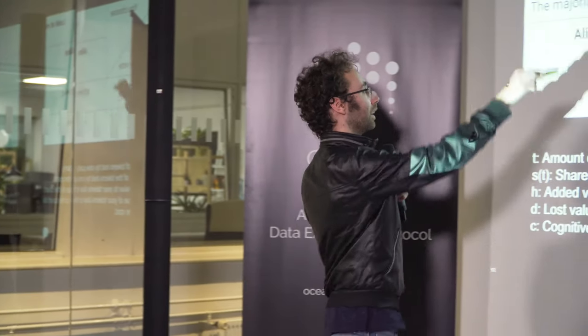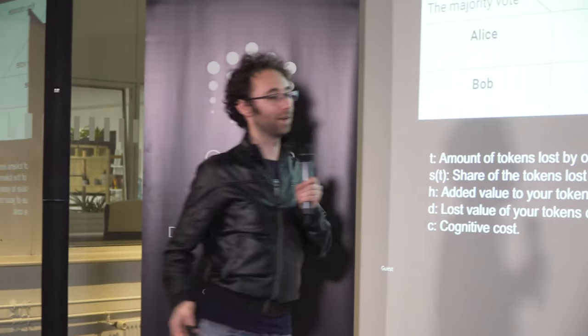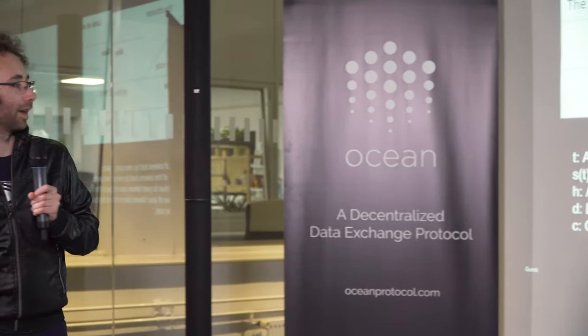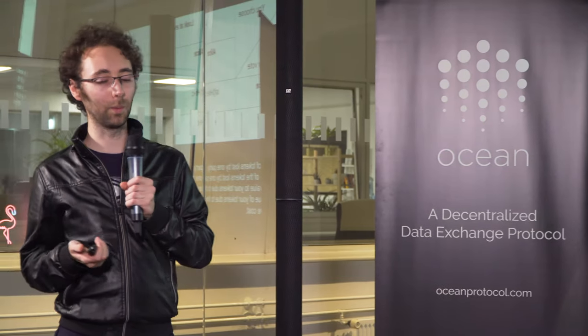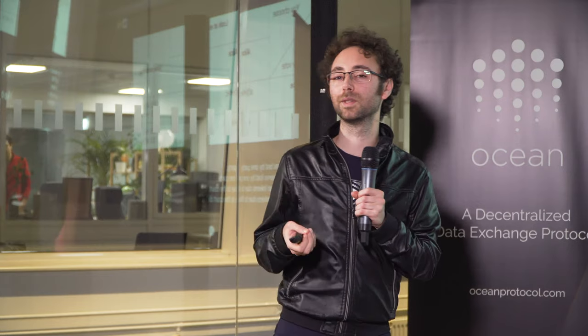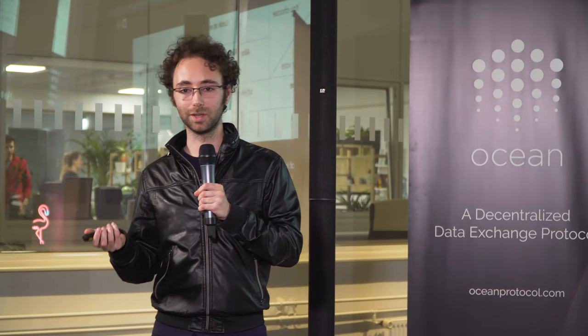We want to stay in the honest equilibrium. It's crucial to start a system in an honest equilibrium. The Doge-on-Trial was an experiment and also a way to launch the system with a fun use case where the Nash equilibrium is honesty, before adding more complex cases.